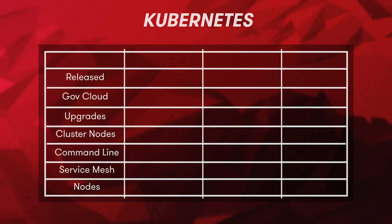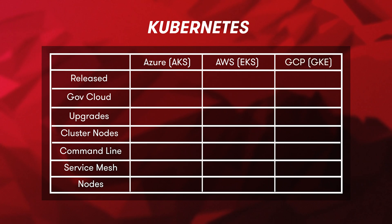All three cloud platforms have their own offerings of managed Kubernetes. If you have most of your applications running on one of these cloud platforms — whether Azure, AWS, or GCP — you should stick to running Kubernetes on that platform. This will give you great integrations with the other existing services you're using. On Azure, you have the Azure Kubernetes Service or AKS.